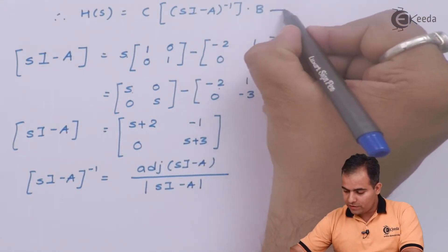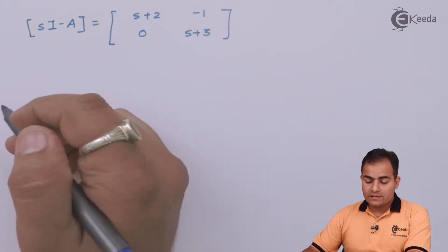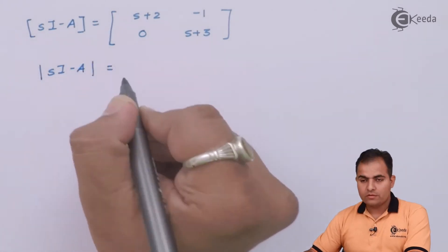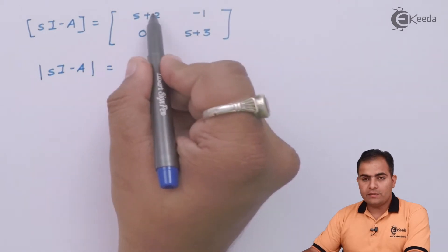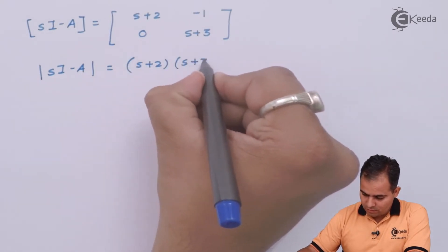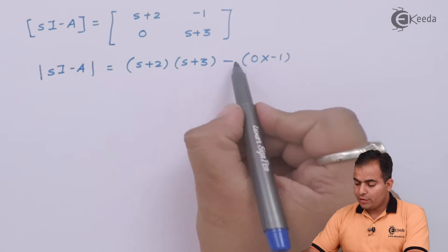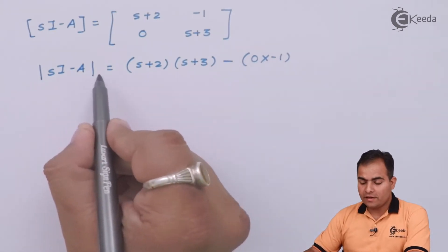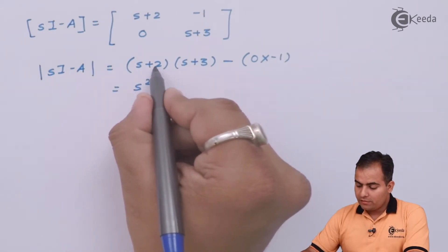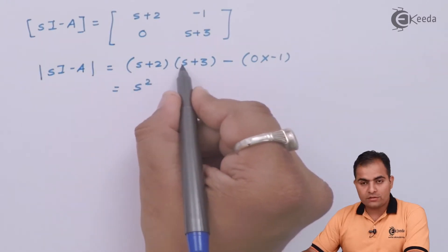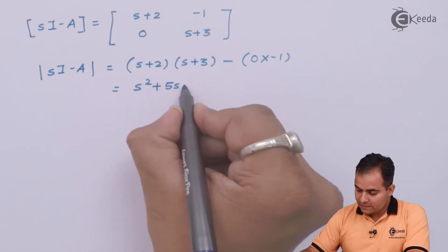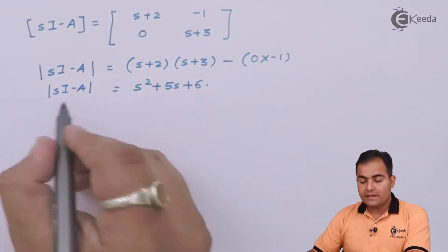Let's call this equation number 1. To find the determinant, multiply the diagonal elements and subtract the product of the off-diagonal elements. 0 into anything is 0, so the determinant comes from the two diagonal products. S × S is S², S×3 is 3S, 2×S is 2S, so 3S+2S is 5S, and 3×2 is +6. So the determinant is S² + 5S + 6.